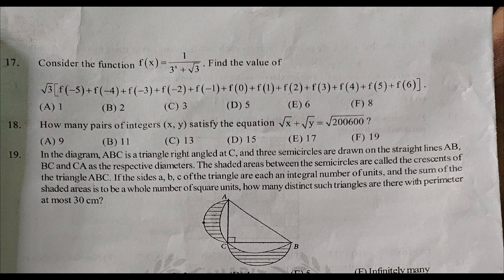How many pairs of integers (x, y) satisfy the equation √x + √y = √(200600)? The answer is 11, B.